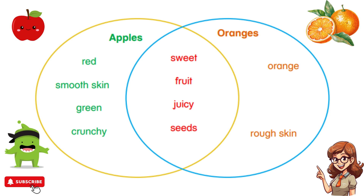A Venn diagram is a special kind of picture that helps us see how different things are connected. When you have two big circles, one circle is for one group of things and the other circle is for another group of things. Where these circles overlap or meet in the middle is where we put things that belong to both groups.